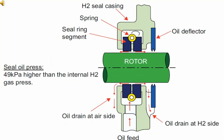Here is the same diagram but a little bigger in size. We can see the hydrogen seal casing, the seal segment, and the seal ring segment. In the casing, oil is being fed. The oil then comes out from this place, forming a thin film. One part of the oil is going to the air side and the other part is going to the hydrogen side.